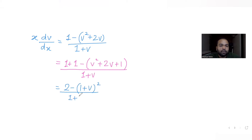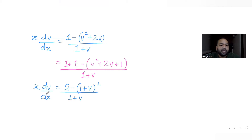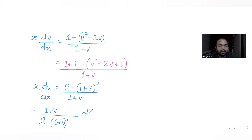So we have x·dv/dx equal to minus[2 minus (1+v)²]/(1+v). Taking all v terms to the left and dx to the right, I get (1 plus v) / [2 minus (1 plus v)²] dv equals dx/x. So the variables are now separated.